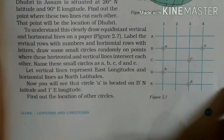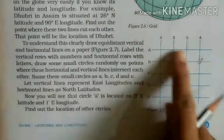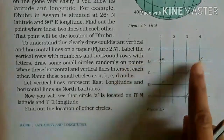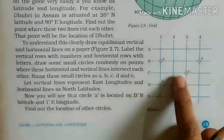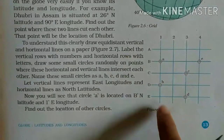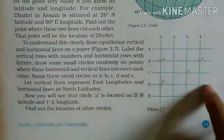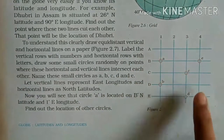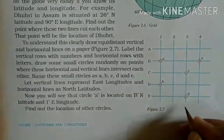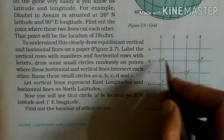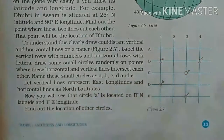In order to understand this, we make vertical and horizontal lines on a paper. The vertical lines represent longitudes and the horizontal lines represent latitudes. We can mark points at intersections and then locate the place using its coordinates.